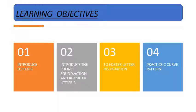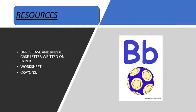The learning objectives for this activity are: introduce letter B, introduce phonic sound, action and rhyme of letter B to foster letter recognition, and practice C-curve pattern. The resources required for this activity are uppercase and lowercase letter B written on paper, worksheet, and crayons.